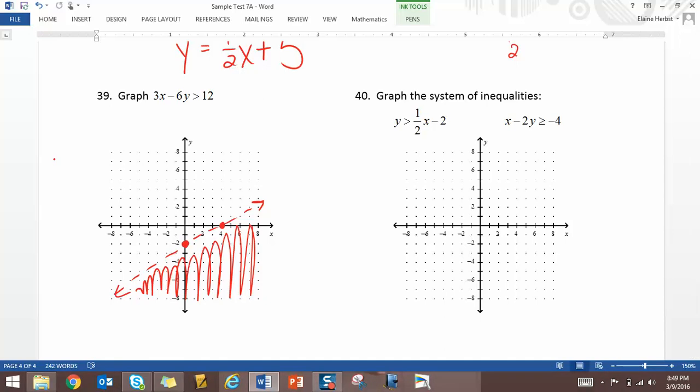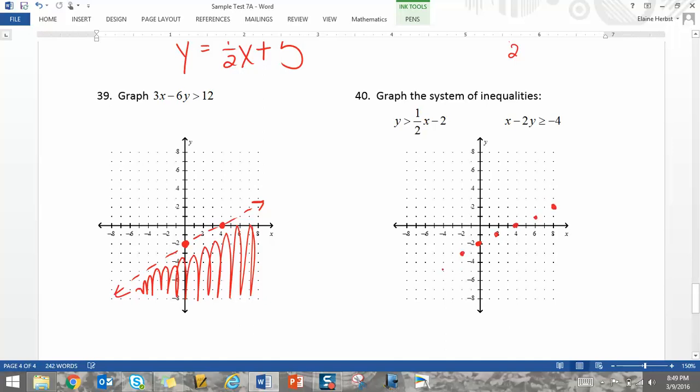For 40, we graph the first inequality. We start at negative 2. Going up 1 and over 2 in the positive direction. Down 1 and over 2 in the negative direction. We have a dotted line.